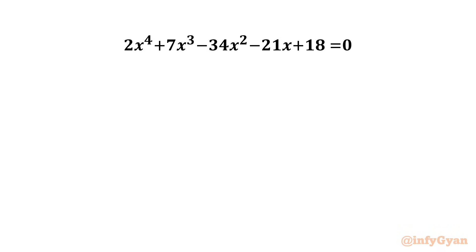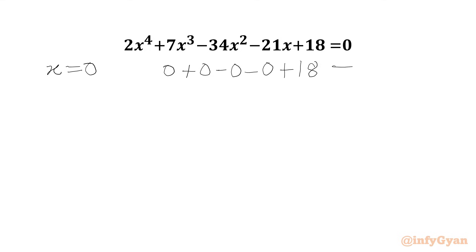Let us get started by checking our equation at x = 0. We get 2(0)⁴ + 7(0)³ - 0 - 0 + 18, which is not equal to 0. So because of the constant 18, x cannot be equal to 0 for our equation.